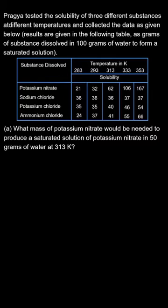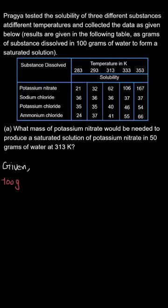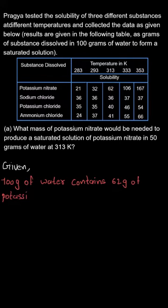The question further asks: what mass of potassium nitrate would be needed to produce a saturated solution of potassium nitrate in 50 grams of water at 313 Kelvin? Looking closely at the diagram, for potassium nitrate at 313 Kelvin, 62 grams of potassium nitrate is required in 100 grams of water to form a saturated solution.